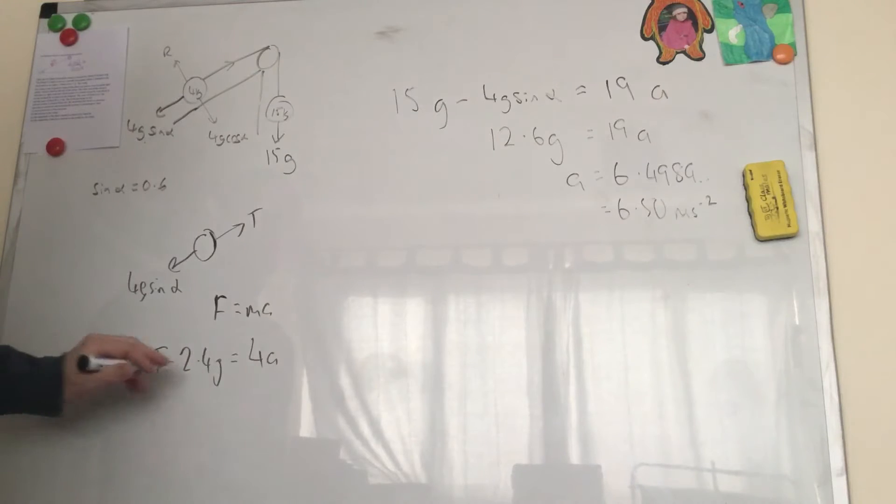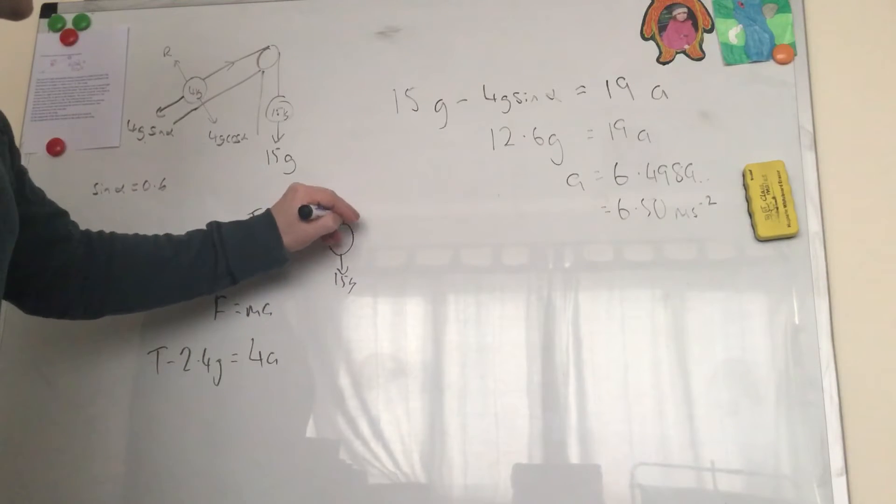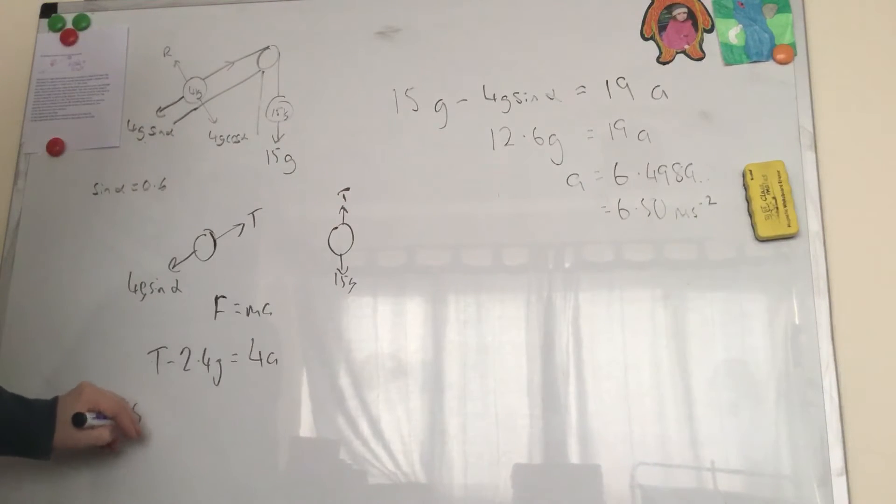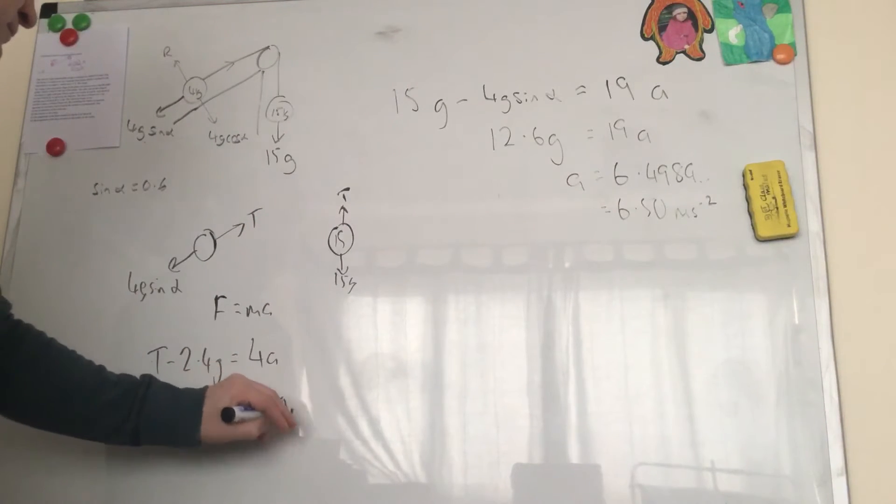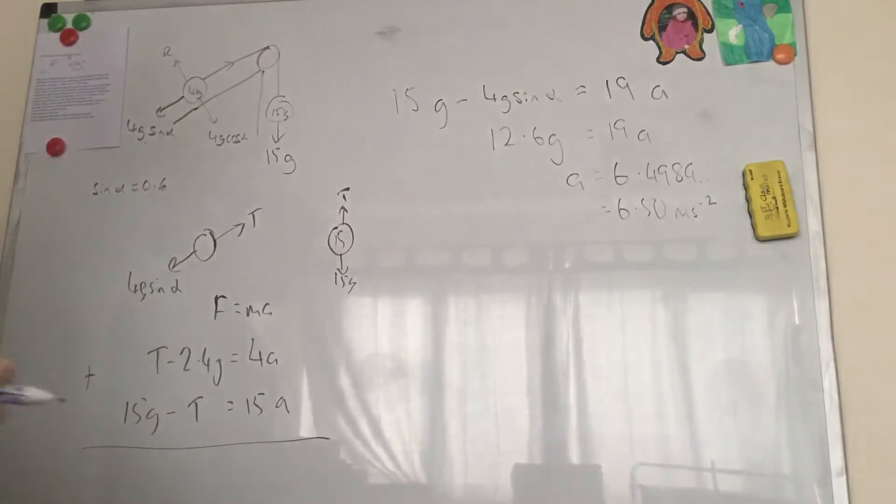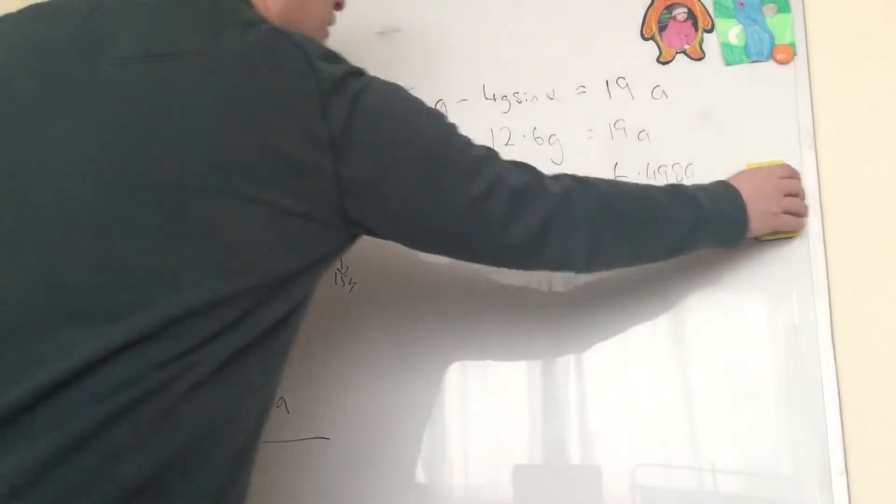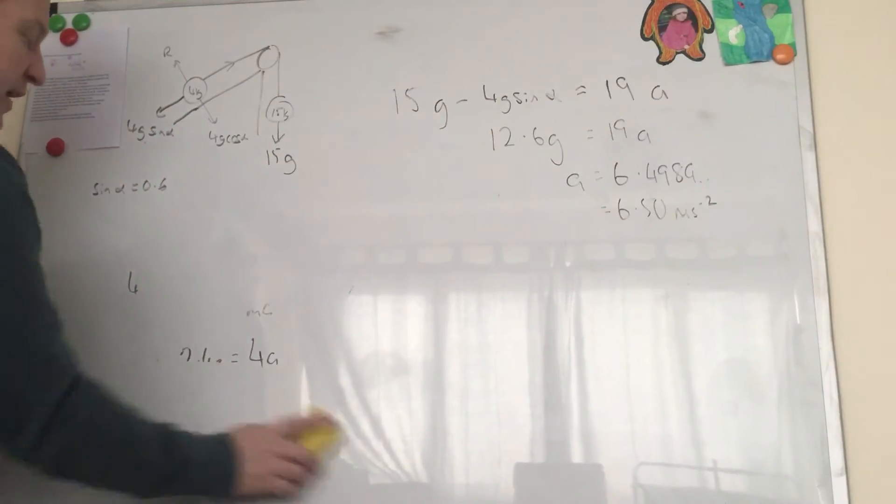And if we look at this particle here, we've got 15g going down and the tension is slowing it down. So we get 15g minus T equals its mass which is 15. And then we get simultaneous equations and we can add them together. And when we add them together, we get to this point. So that's how I would do A and that's how I've always done it, but I quite like the approach that a lot of people have with A as well.